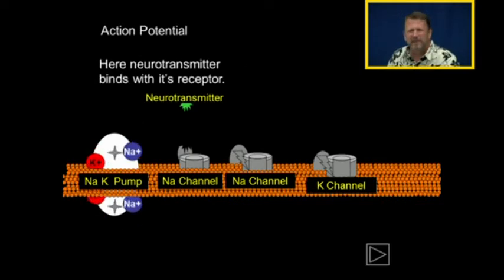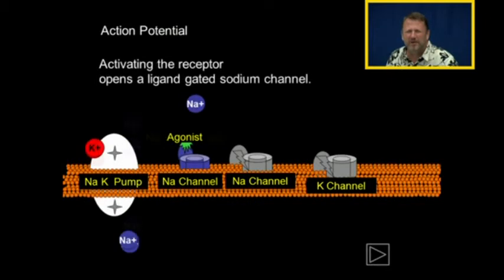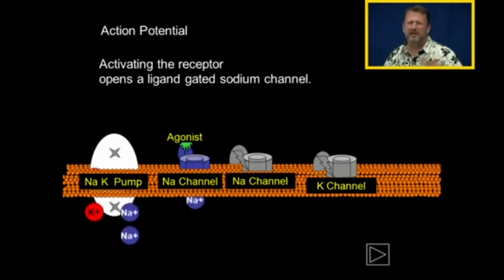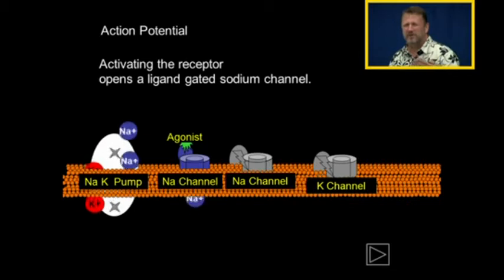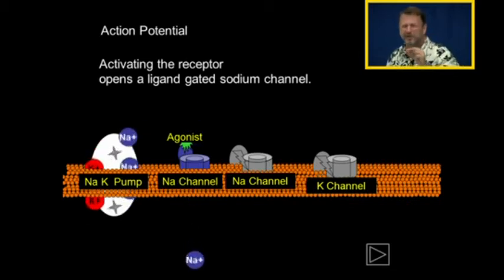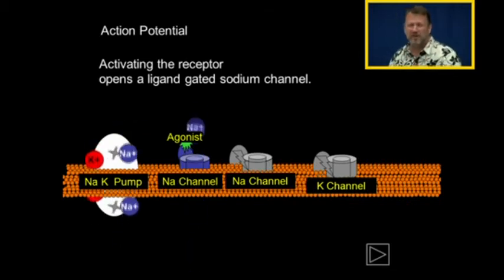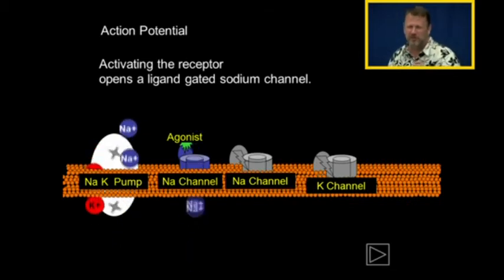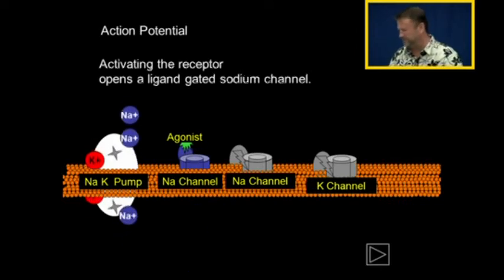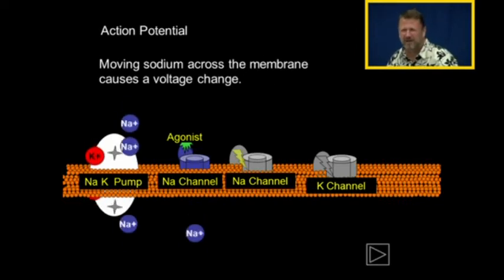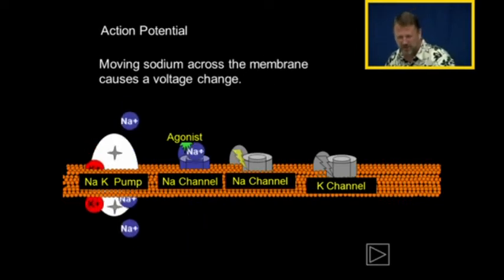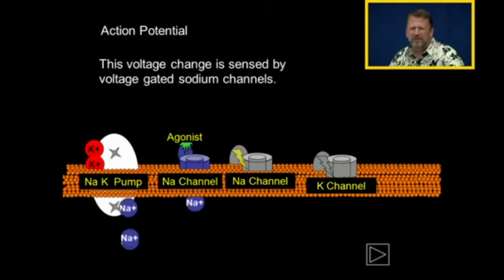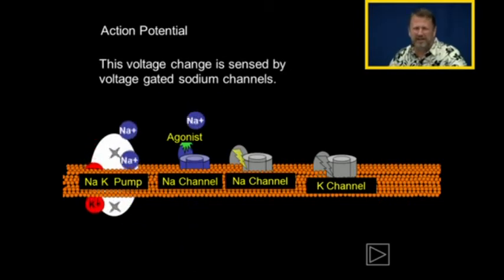Here's a neurotransmitter, and it's going to bind with its receptor, opening a sodium channel. The neurotransmitter has opened a sodium channel. Sodium comes into the cell, causing a voltage change across the membrane. Moving sodium across the membrane causes a voltage change across the membrane, and this voltage change is sensed by voltage-gated sodium channels.